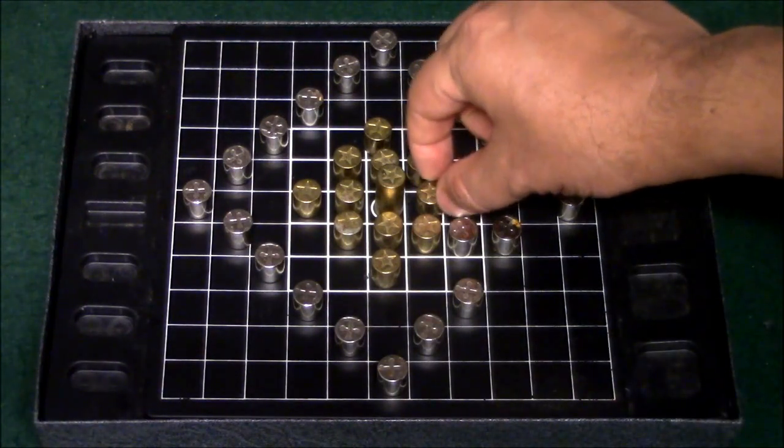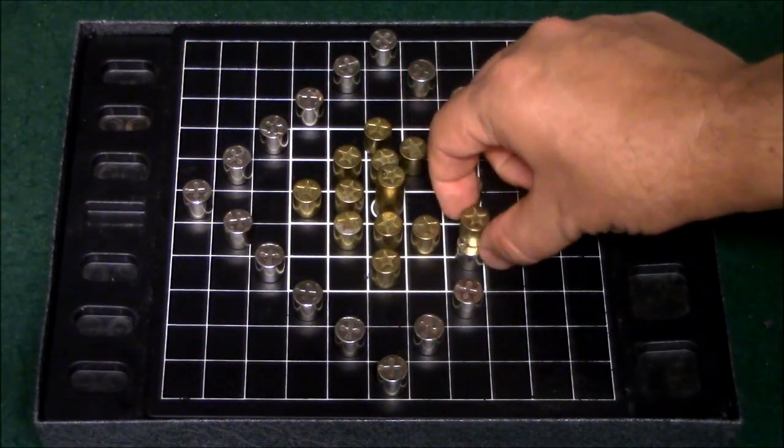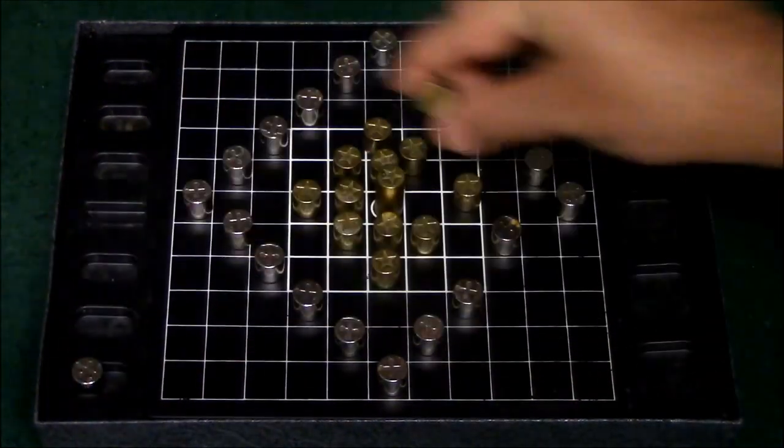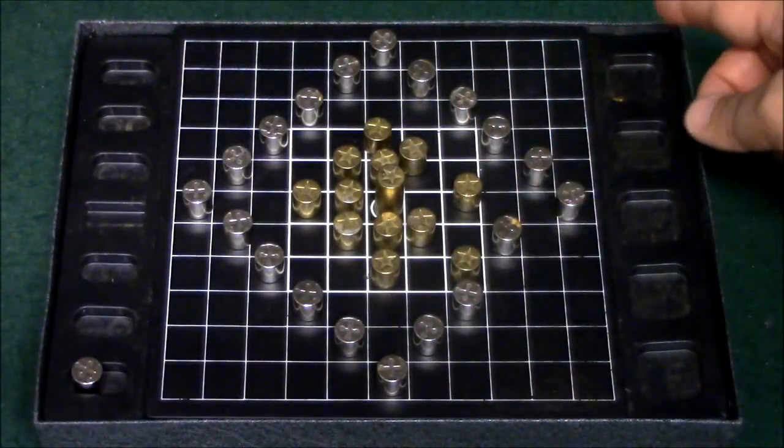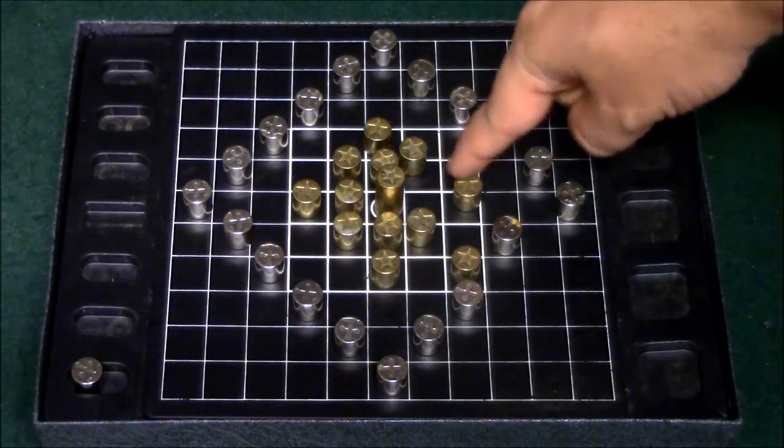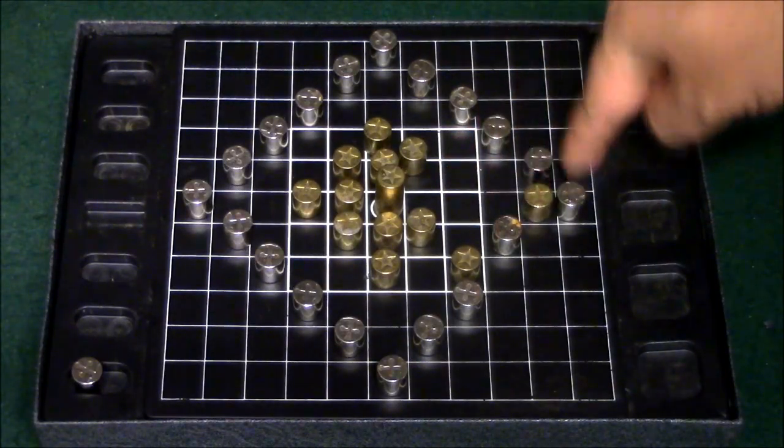So now it's gold's turn. So gold decides he's going to capture this piece right here and put him out of play like so. And then gold decides he's going to also do this, he's going to block this guy out.